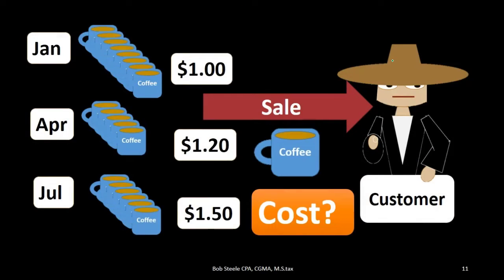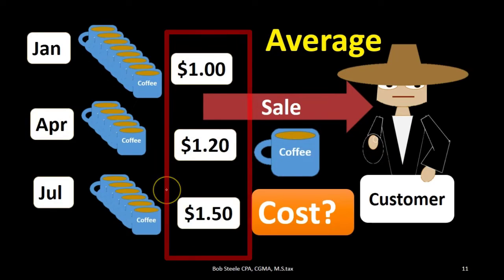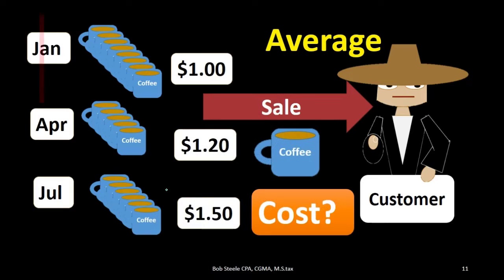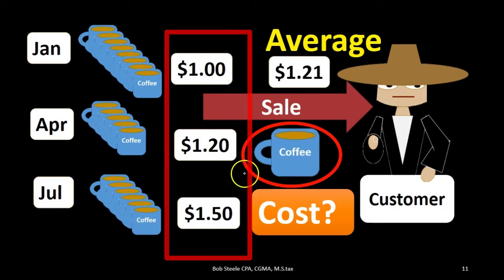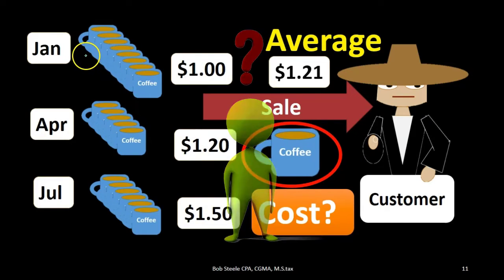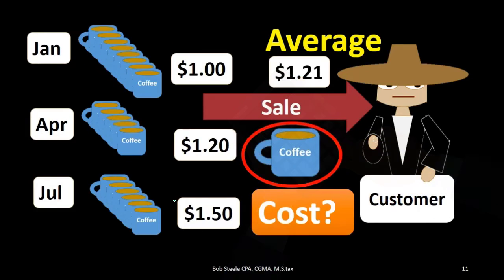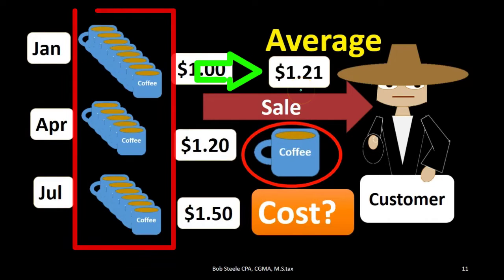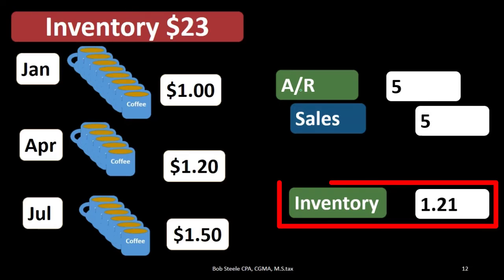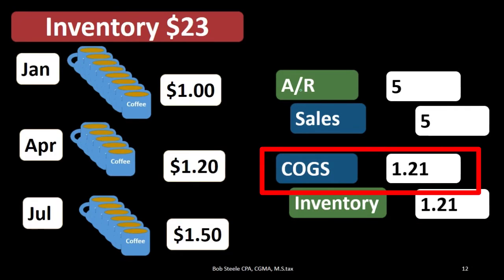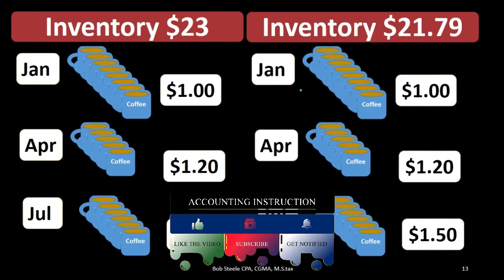The last assumption is somewhere in the middle — the average method. We say we don't know which mug we sold, so rather than assuming $1.00, $1.20, or $1.50, we say the mug cost about $1.21. To calculate that average, we don't simply add the three prices and divide by three. We take a weighted average: the number of cups times $1.00, plus the number times $1.20, plus the number times $1.50, divided by the total number of cups. Under average cost, inventory goes down by $1.21 and cost of goods sold is $1.21, leaving ending inventory at $21.79.